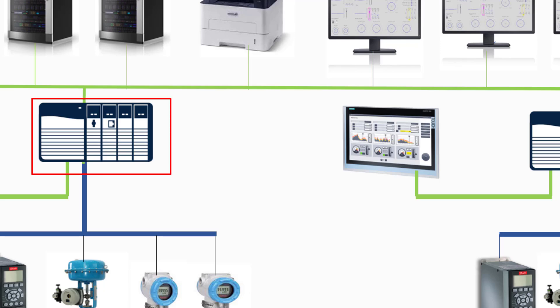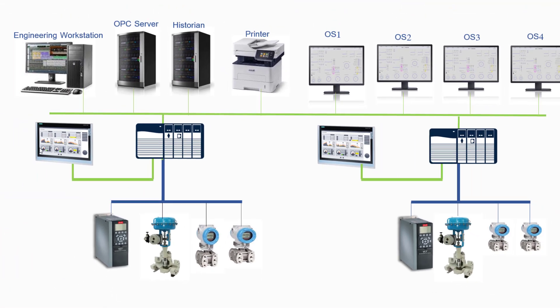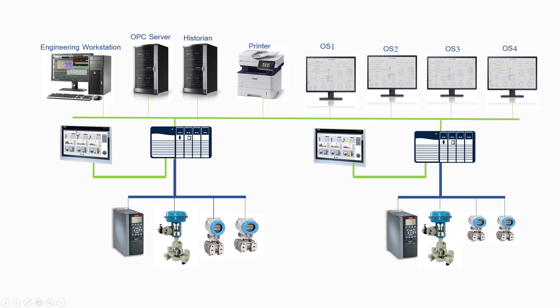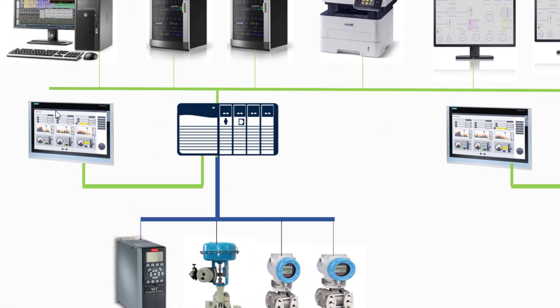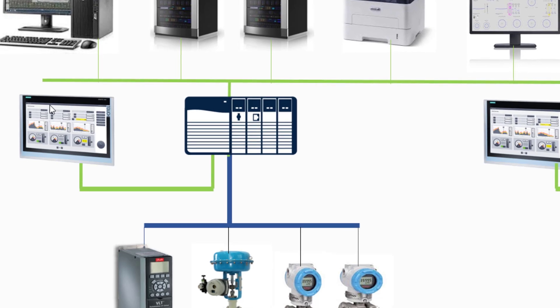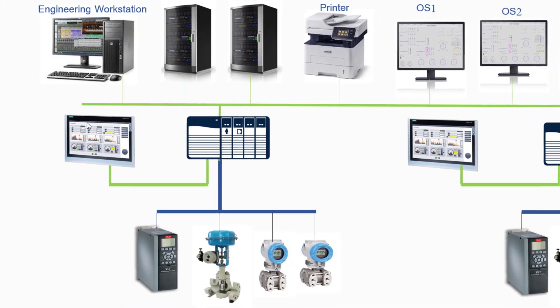In PLC, you can't directly observe the ongoing processes or the temperature within them unless you establish a connection using your laptop or access it online. Alternatively, you can link it with an HMI, which stands for Human Machine Interface. As its name suggests, an HMI serves as the interface between humans and machines. Through the HMI, you can visualize the status and values of various processes in real time.